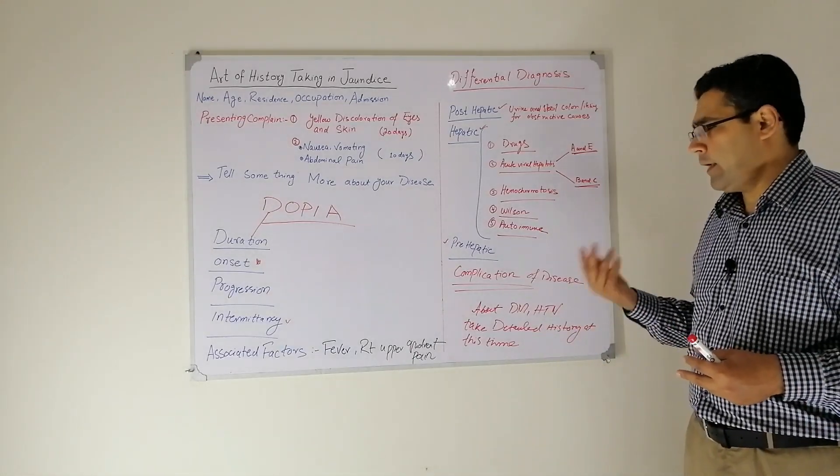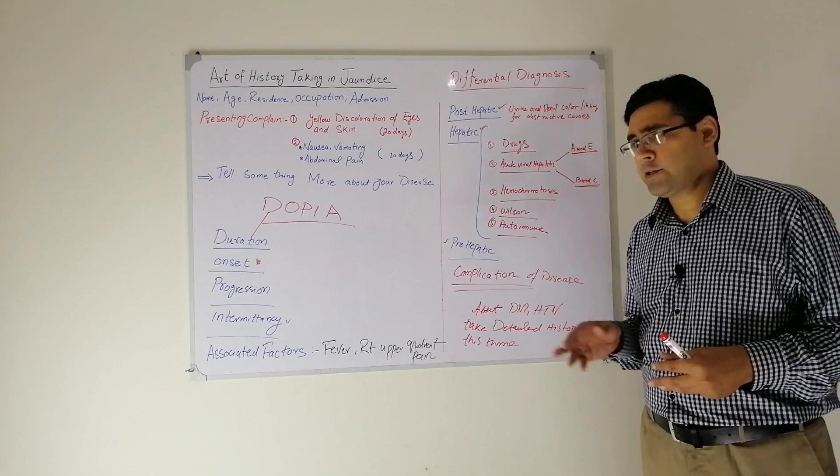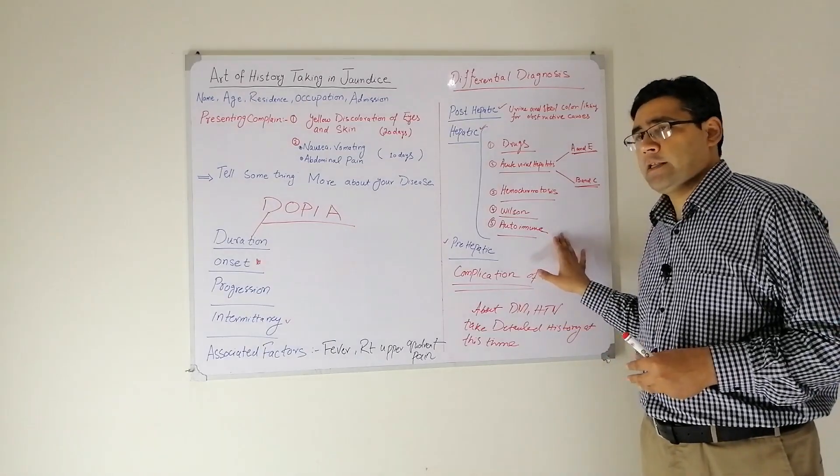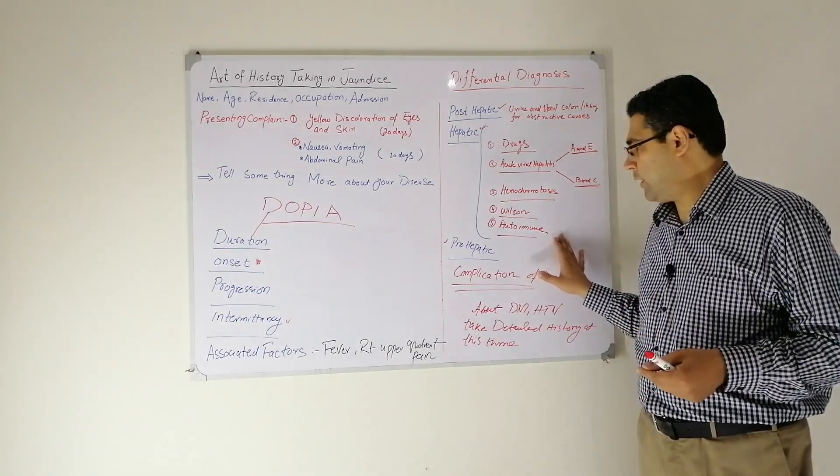In case of autoimmune hepatitis, you will ask if there is any history of rash or oral ulcers.